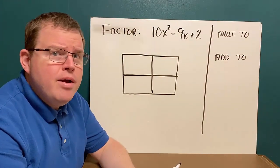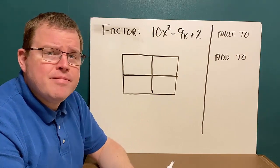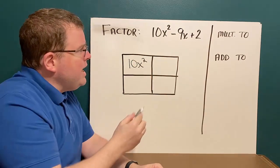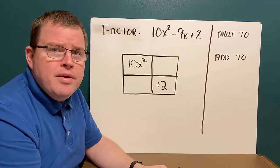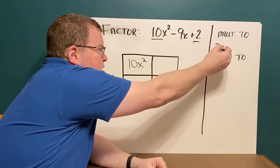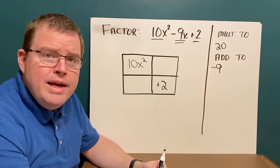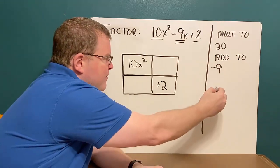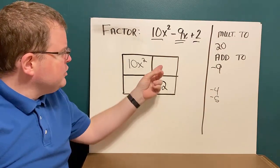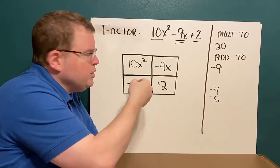Let's try another example — this one's for you to try. Can you factor the trinomial 10x squared minus 9x plus 2? Pause the video here and give it a try. We begin by writing 10x squared in the top left and plus 2 in the bottom right. We take the first times the last: 10 times 2 is 20. We need numbers that multiply to 20 and add to negative 9. Negative 4 and negative 5: negative 4 times negative 5 is 20, and negative 4 plus negative 5 is negative 9. So we put minus 4x and minus 5x in the boxes.